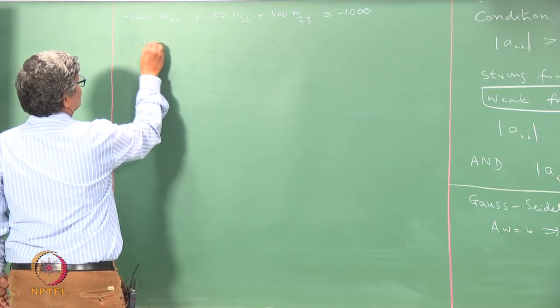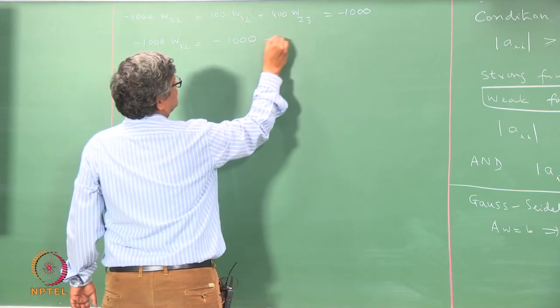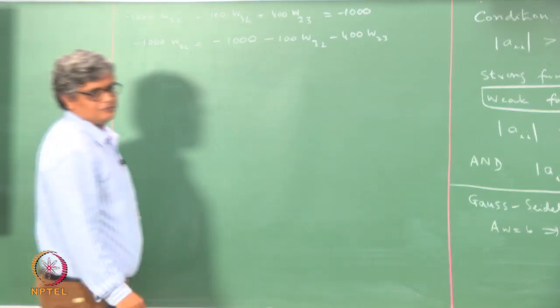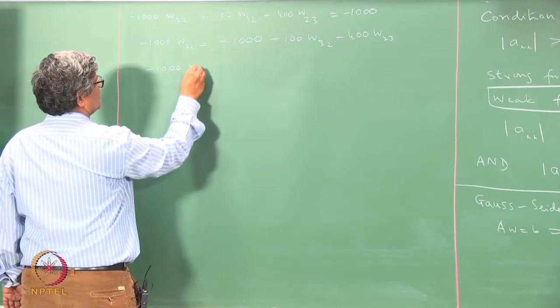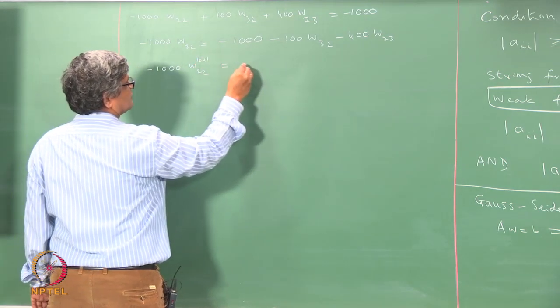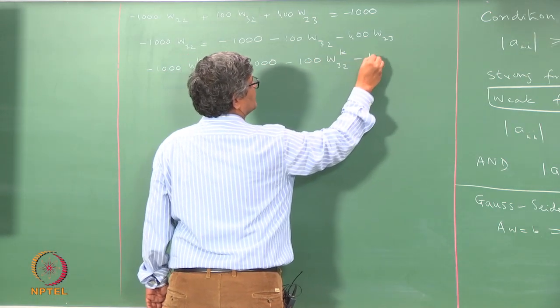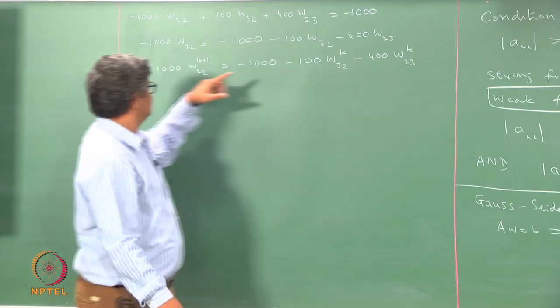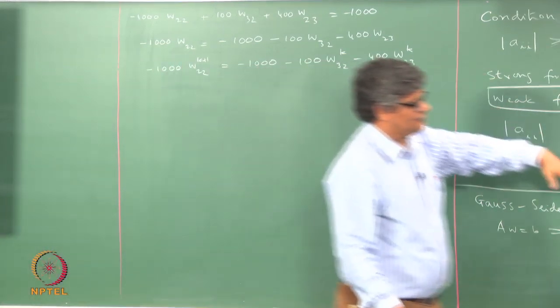We can rewrite this equation as: minus 1000·w22 equal to minus 1000 minus 100·w32 minus 400·w23. From this we derive an iterative formula: w22^(k+1) equal to (minus 1000 minus 100·w32^k minus 400·w23^k) divided by 1000. We need to do this for each of the 9 equations, keeping the diagonal term on the left-hand side in each case.